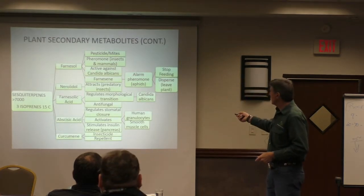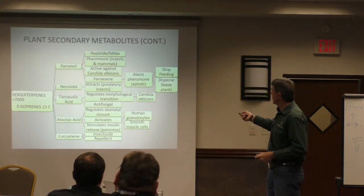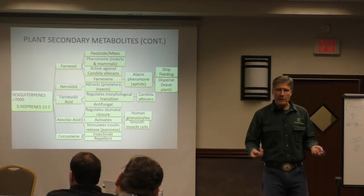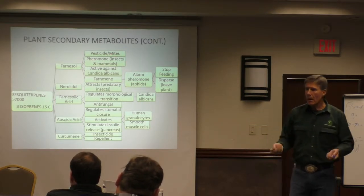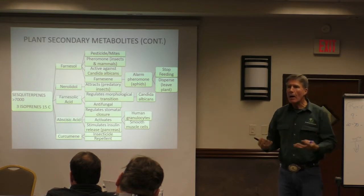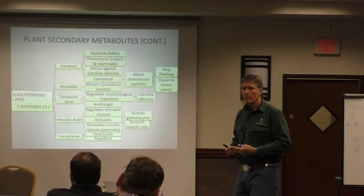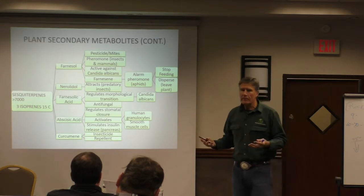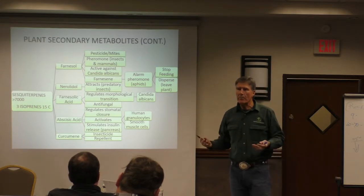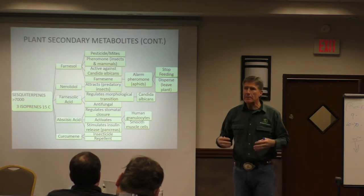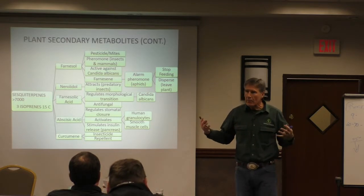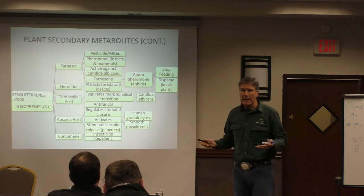We get into these different types - we have mites and insecticides. When plants produce these compounds, this is their chemical arsonary. Plants can make all of these different compounds to defend themselves against pests, pathogens, and things that want to eat them.